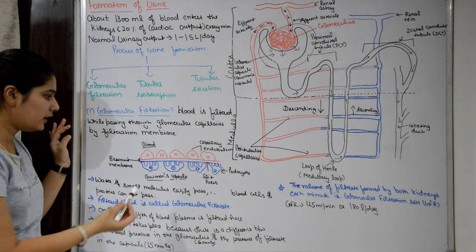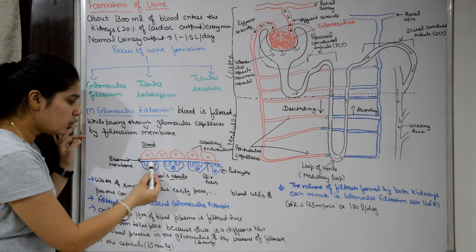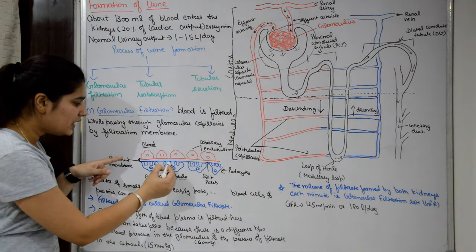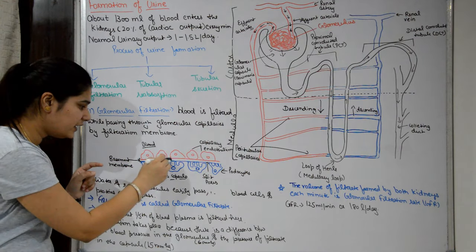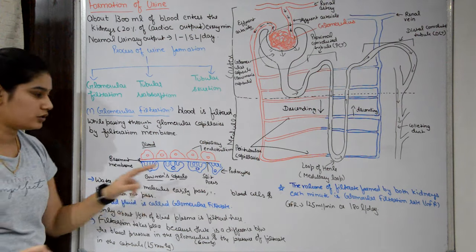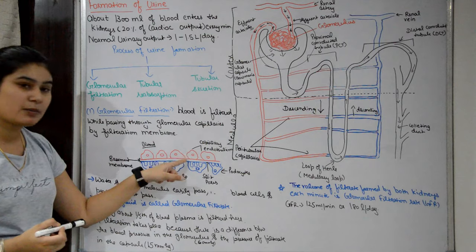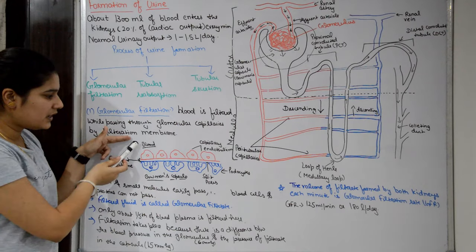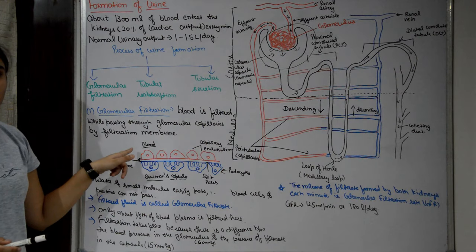The filtration membrane consists of capillary endothelium and a basement membrane. The inner lining of the Bowman's capsule is made of specialized epithelial cells called podocytes, which have foot-like projections. Podocytes also have filtration slits or slit pores. Together, the capillary endothelium and Bowman's capsule form a semi-permeable filtration membrane.